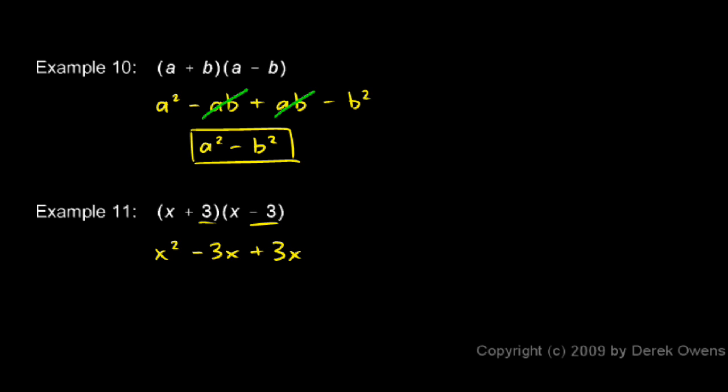And we do the last term, now 3 and negative 3 multiplied together, give us a minus 9. And these guys cancel each other out, and we're left with x squared minus 9. And you can see the difference of two squares here. This is obviously x squared, and this is 3 squared. And it's the difference of two squares, they're subtracted. So x squared minus 3 squared is the same as x plus 3x minus 3. Or when we multiply those two together, we get that as an answer.